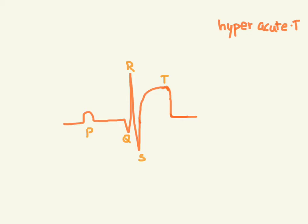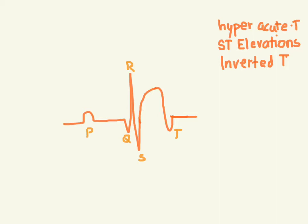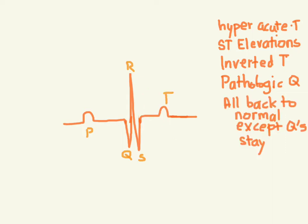So after the hyperacute T's come ST elevations. After this, the T waves may actually invert. And after the inverted T's, you will develop deep Q waves. These pathologic Q's represent dead tissue — there's no electrical activity going through them. There are criteria that define what are pathologic Q's: they've got to be deep, and they have to be at least one-third the size of the R wave for us to really start worrying about them. Finally, everything goes back to the way it was, except that the Q's remain because that tissue is dead. This is called the evolution of an MI.